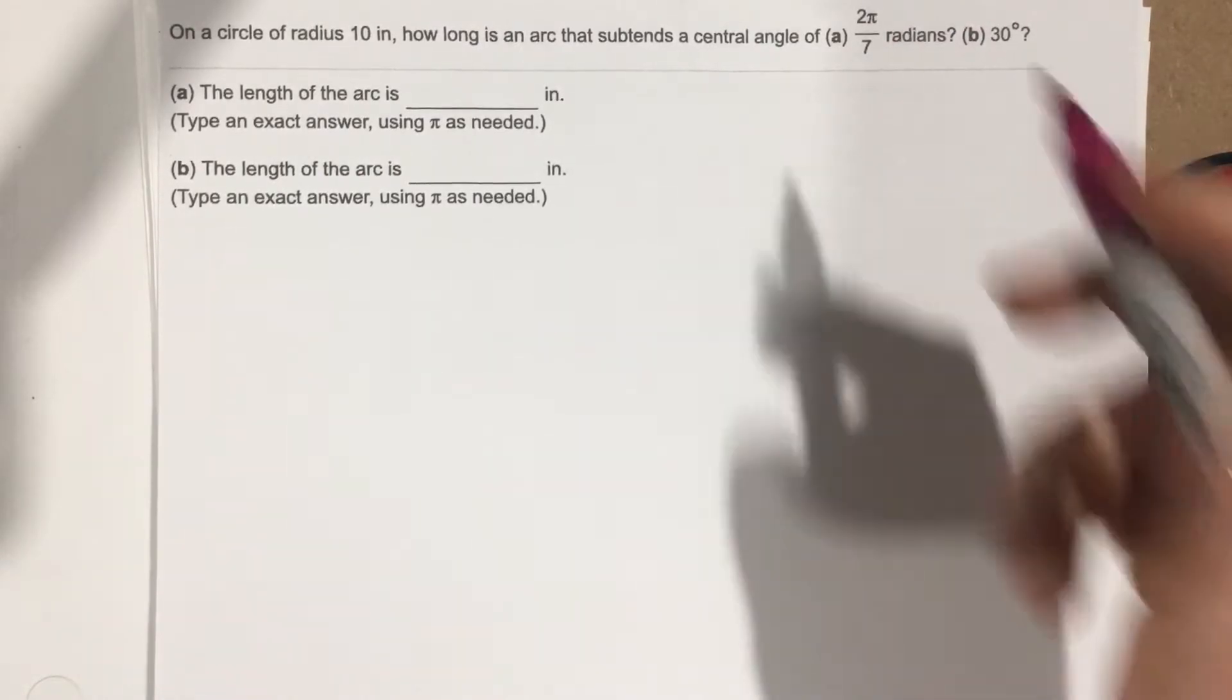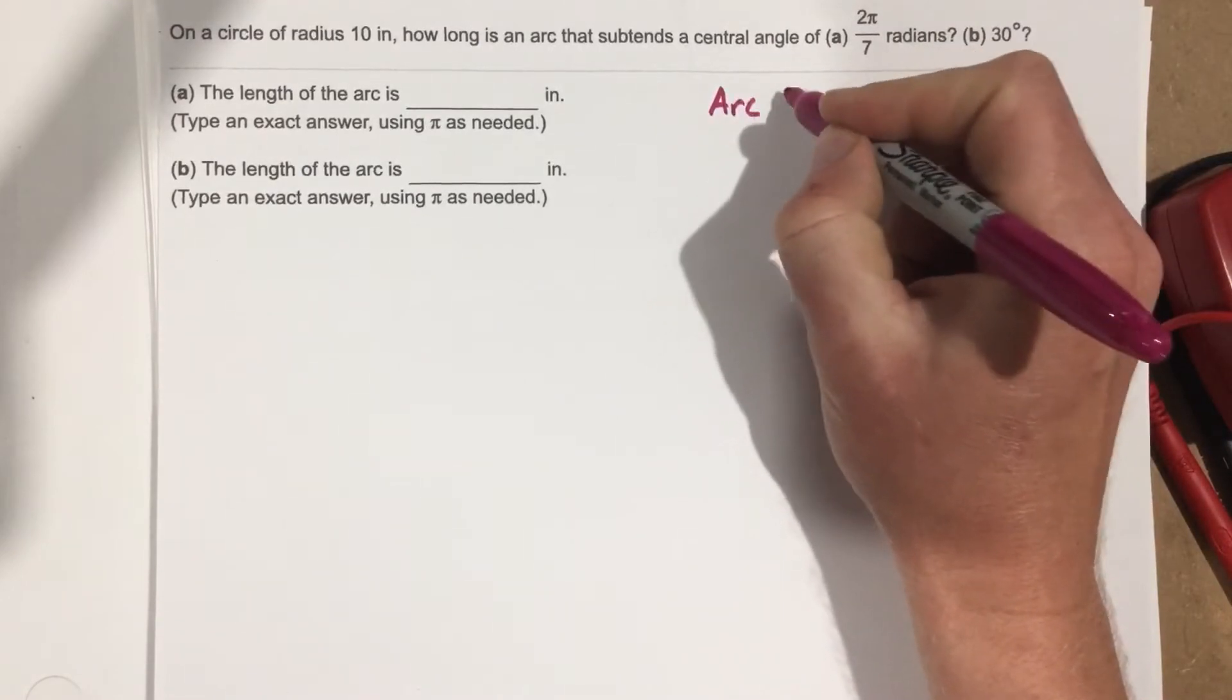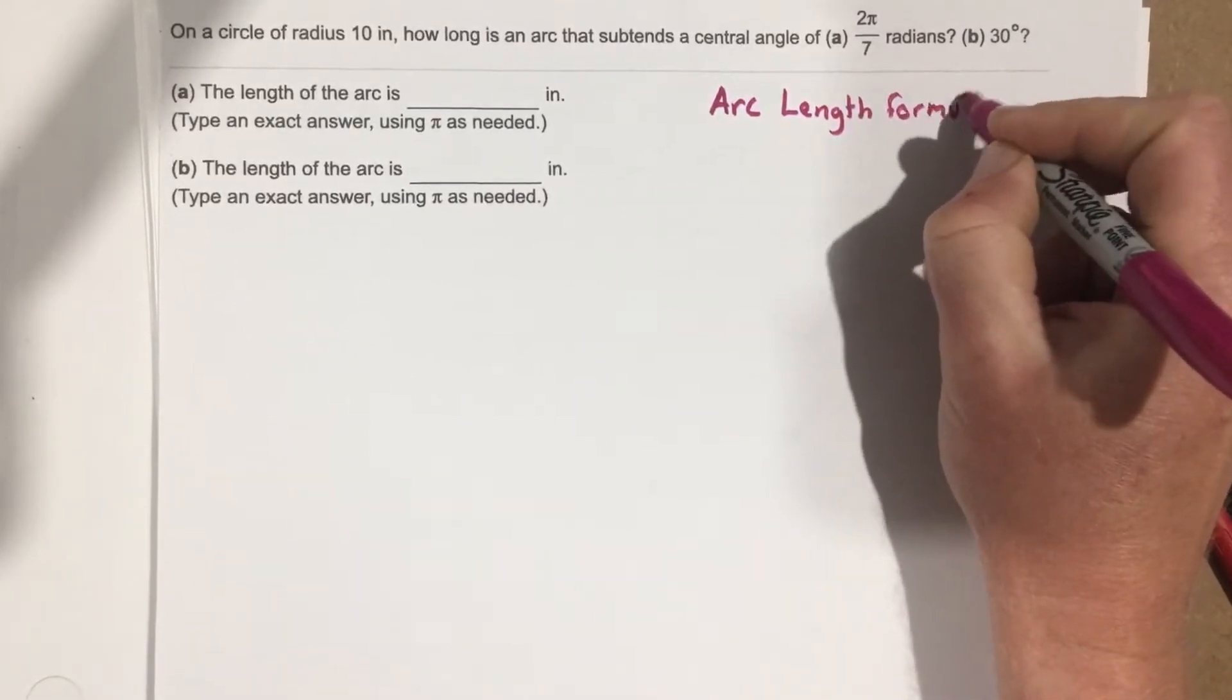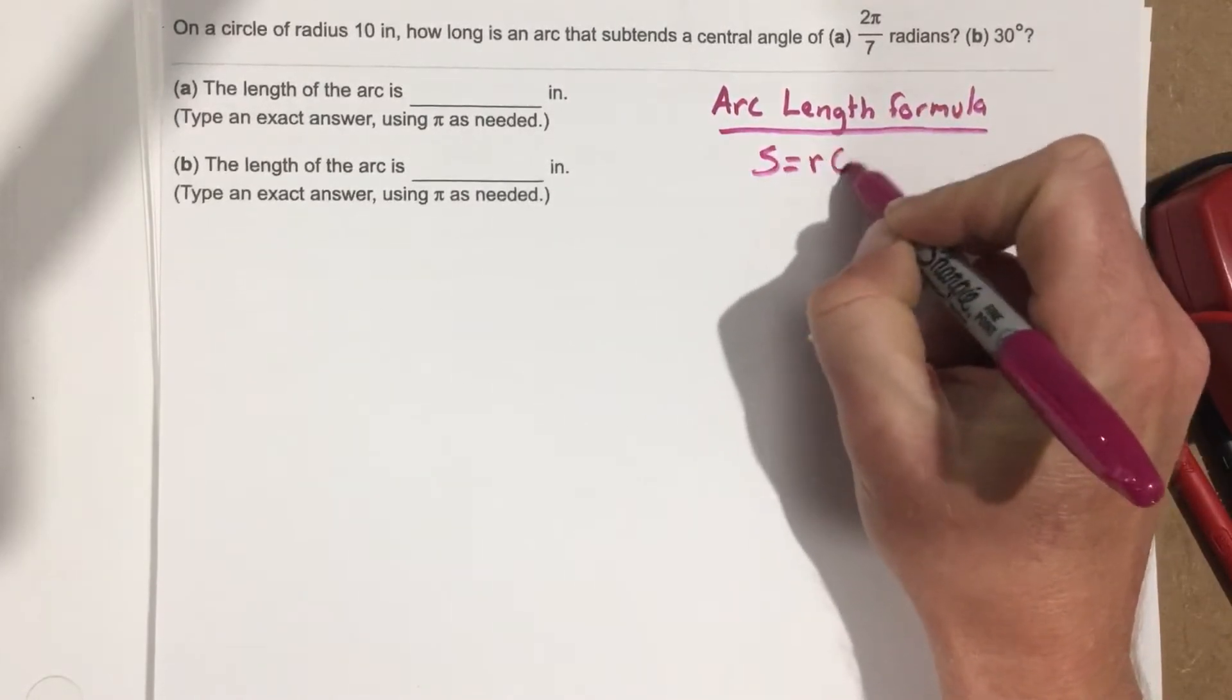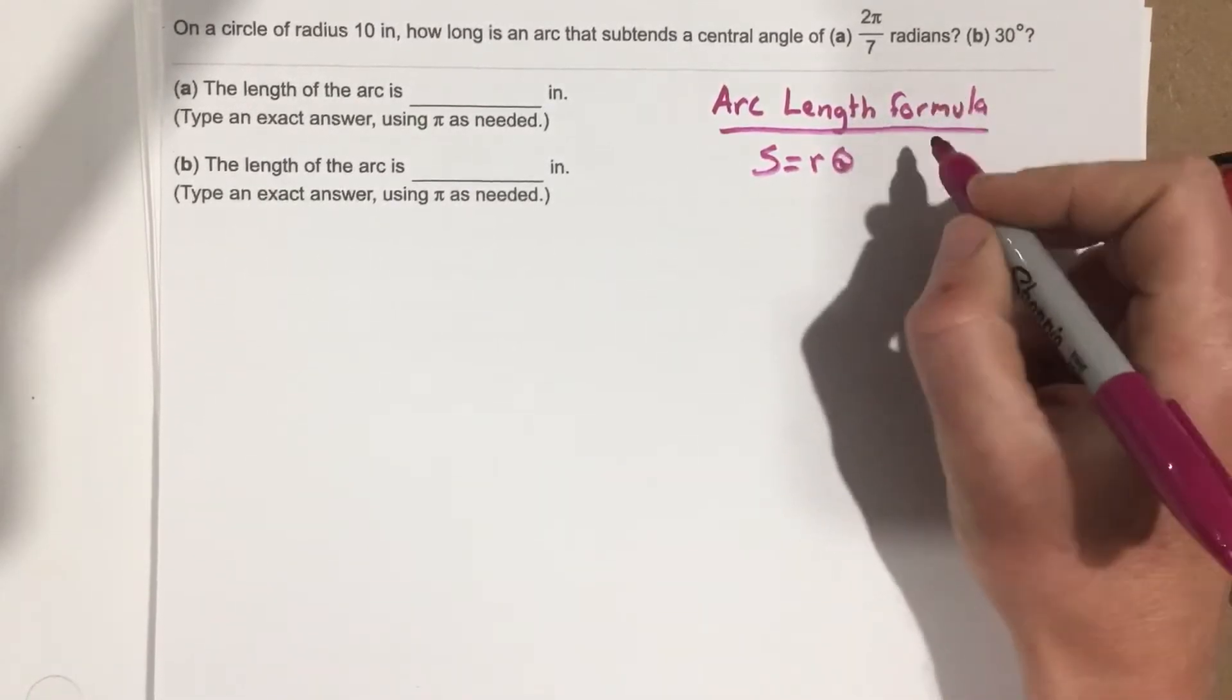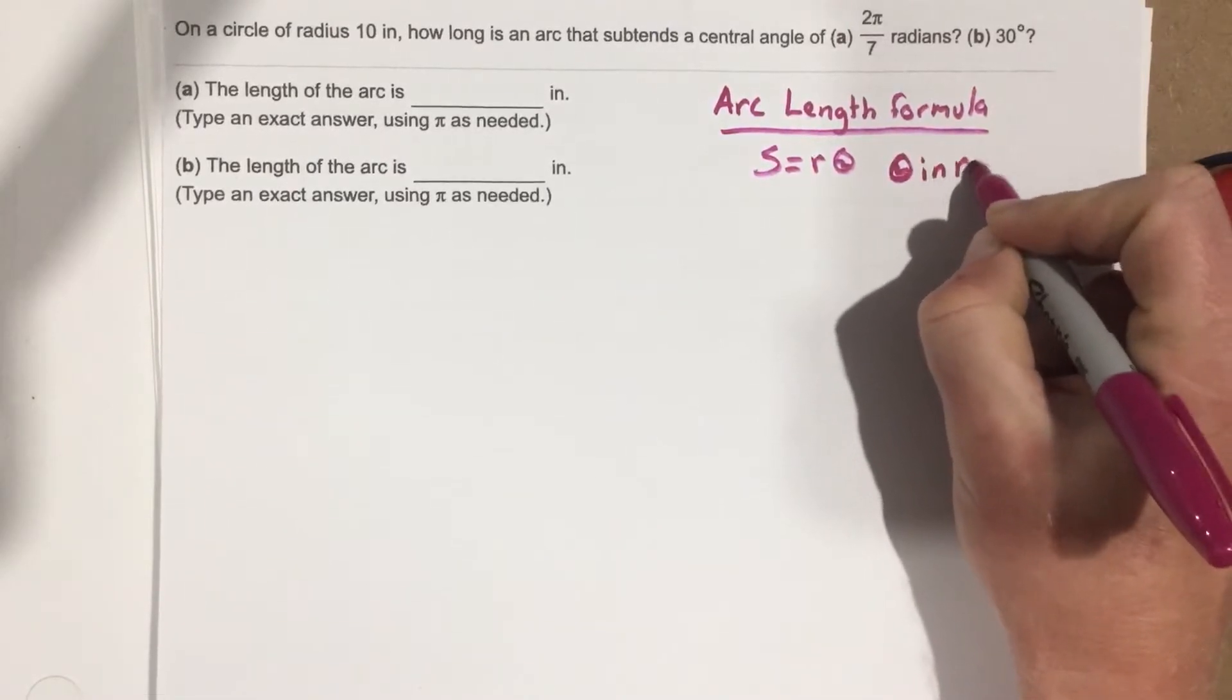So first of all, we need to define what the arc length formula is. The arc length formula is S equals R theta. Now in this case, with S equals R theta, we need theta to be in radians.